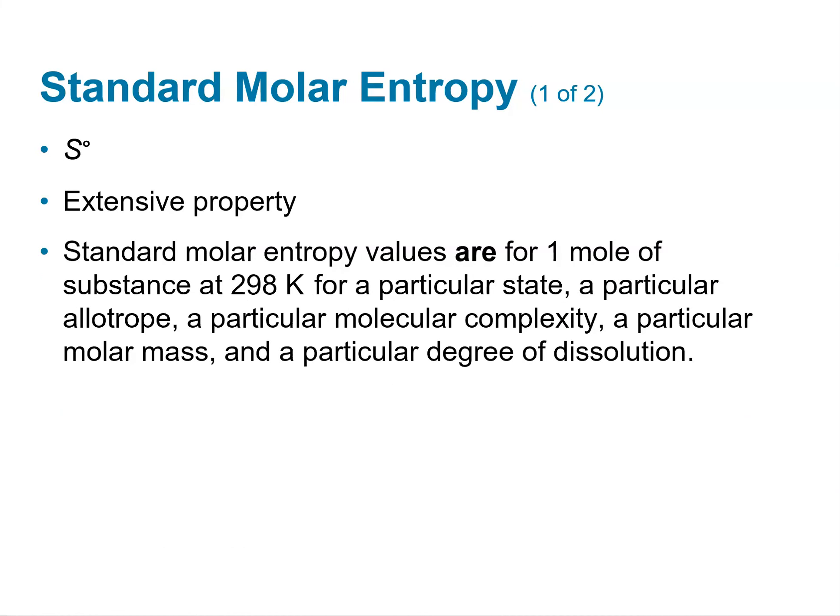A little bit more information about standard molar entropy. If you think back to things we talked about in Chem 105, there are standard molar equivalents for many different things that have been measured and we can pull these off of tables. Standard molar entropy is denoted with the little naught sign — S with a naught superscript. This is an extensive property. Standard molar entropy values are for one mole of substance at standard temperature, 298 Kelvin, for a particular state, allotrope, molecular complexity, molar mass, and degree of solution.